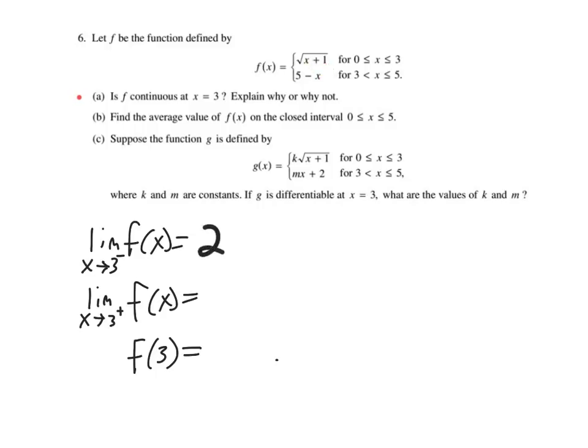So let's check and see if that matches with the limit as we approach 3 from the right. So if we're approaching this piecewise function from the right, it means we need to be using this because infinitely close values to 3 from the right, 3.0001, means we need to use this bottom function. So 5 minus 3 gives us 2. That part checks out.